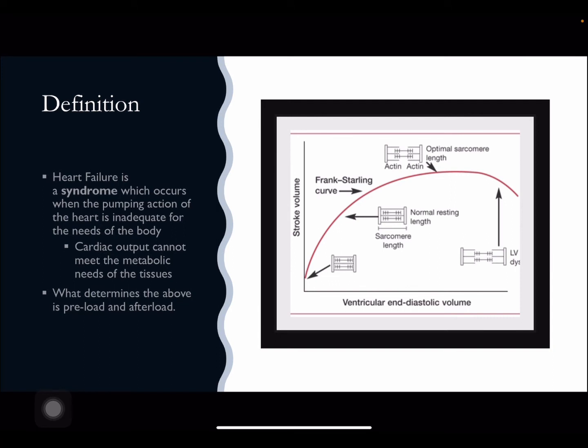This increase in size allows it to produce more force during contraction, but this is only effective up until a particular point — that's the top of this particular curve. After this point, the recoil action starts to fail because the cardiac fibres are too separated from one another as a result of the hypertrophy. This subsequently leads to a reduction in efficiency of contraction and therefore a paradoxical worsening of the diseased state.